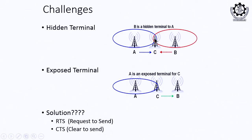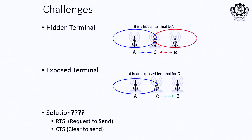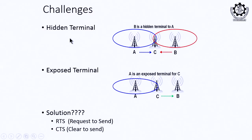When both A and B transmit to the same node C simultaneously, the data received at C will be collided, resulting in inefficient transmission or total data loss. We say B is a node hidden to A — A has no idea about B, and B has no idea about A. Since A and B are hidden to each other, this is a typical problem called the hidden terminal problem.